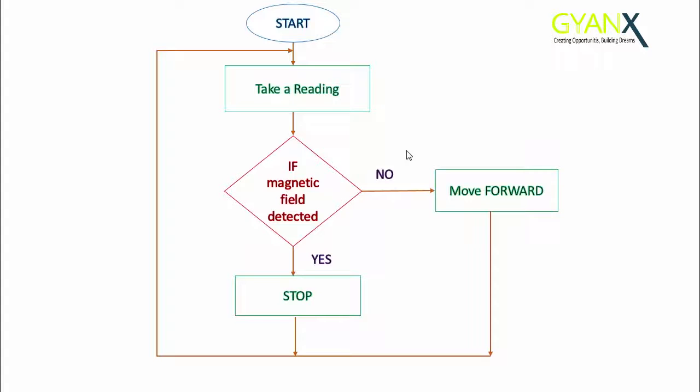Unless it detects a magnetic field, it will keep searching. We are using a magnetic field detection sensor named Hall sensor. This Hall sensor is digital, which means it will send one if it detects any magnetic field and zero if it does not.